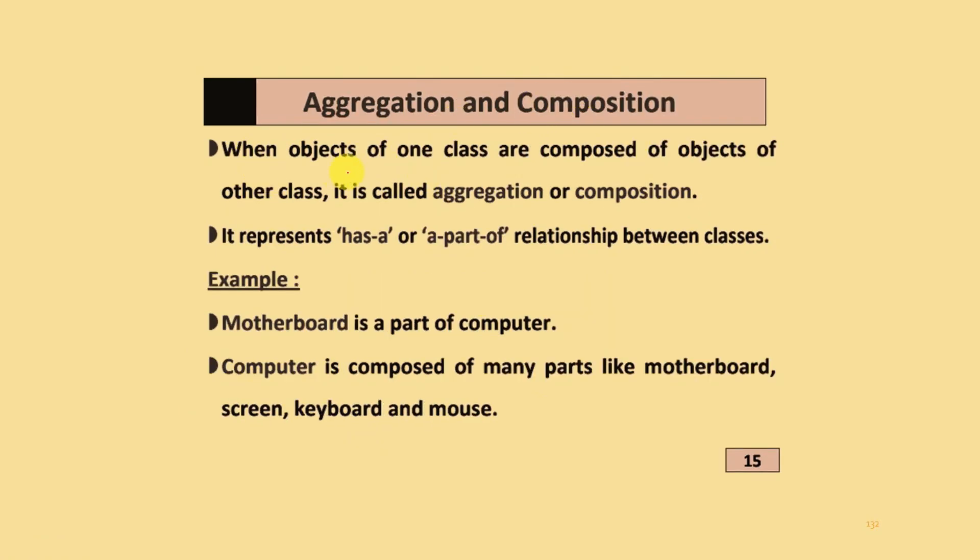Aggregation and composition: when objects of one class are comprised of objects of another class, it is called aggregation or composition. It is represented as a part-of relationship between classes. Motherboard is part of computer, and computer is composed of many parts like motherboard, screen, keyboard, and mouse.